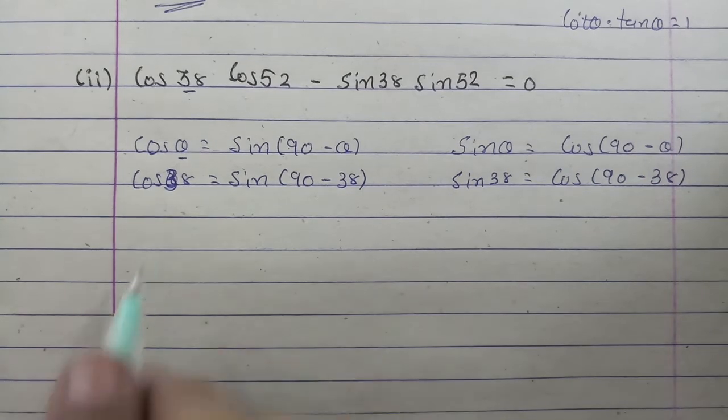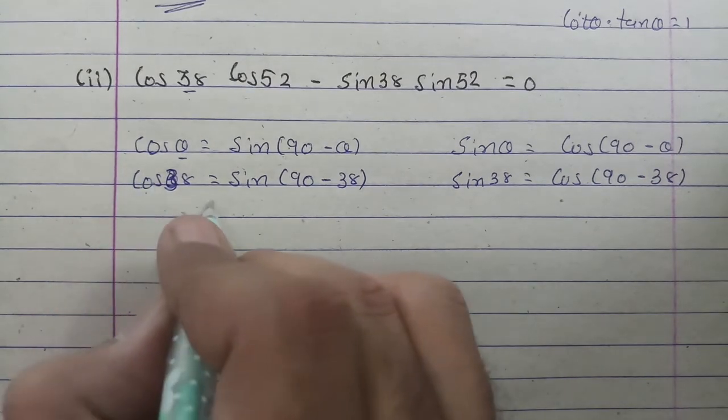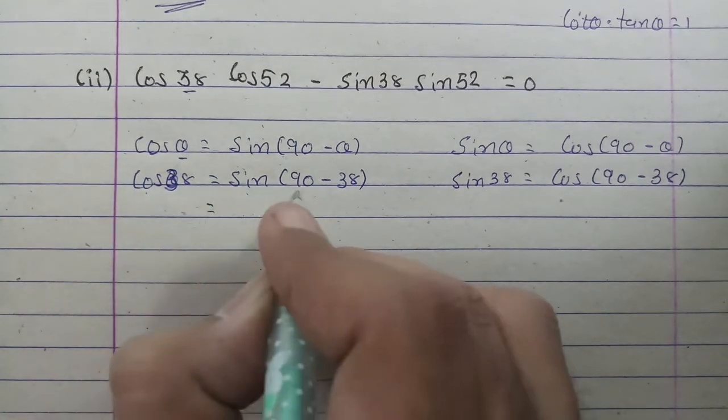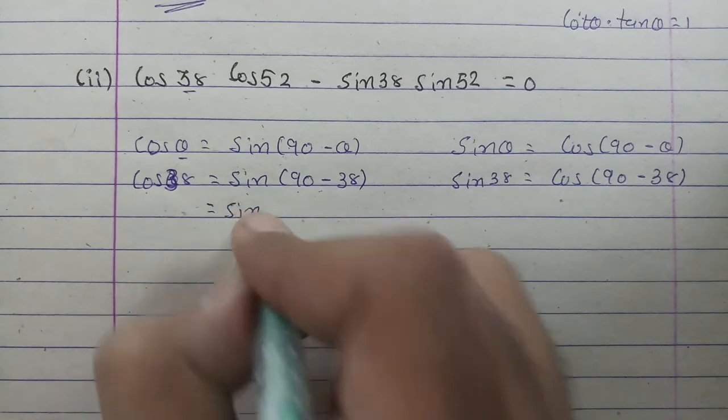Now cos 38° will remain as it is. Sin(90° - 38°) can be written as sin 52°, so cos 38° can be written as sin 52°.